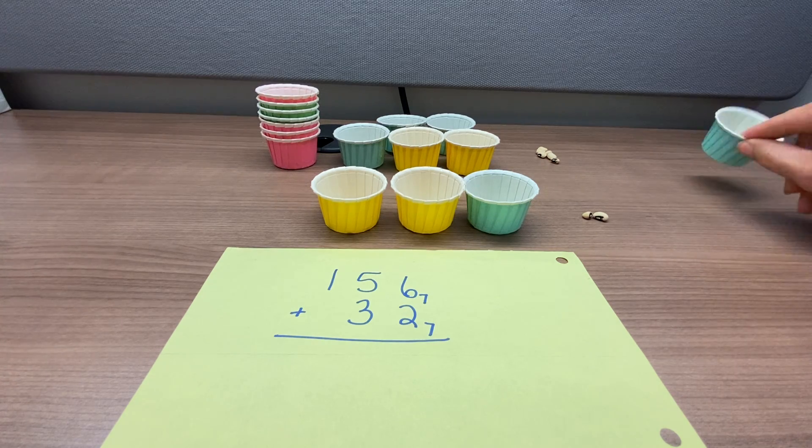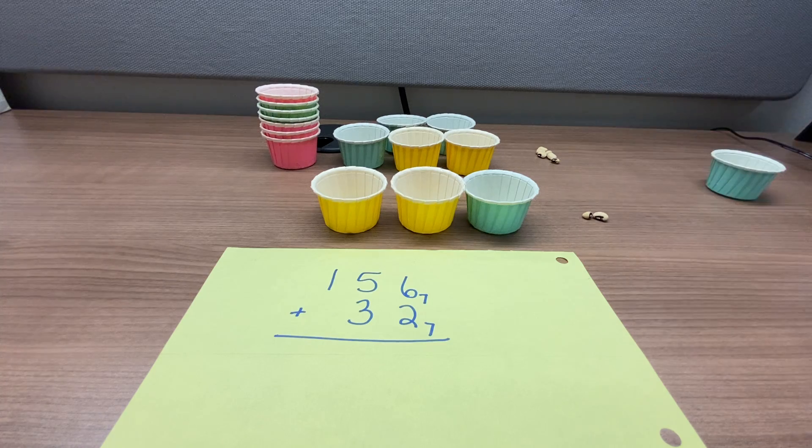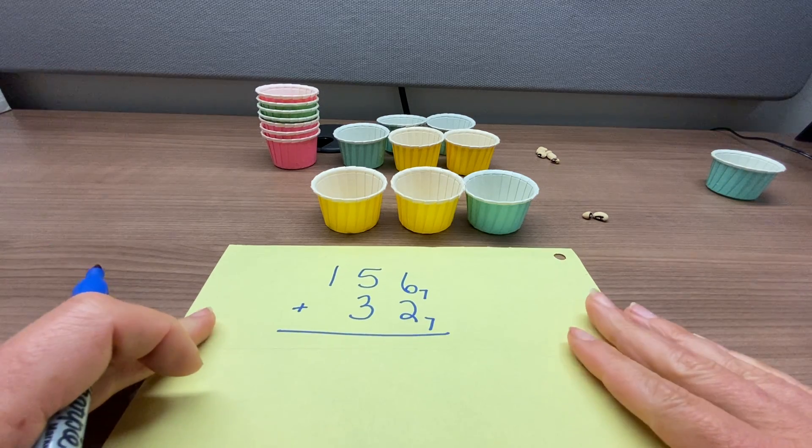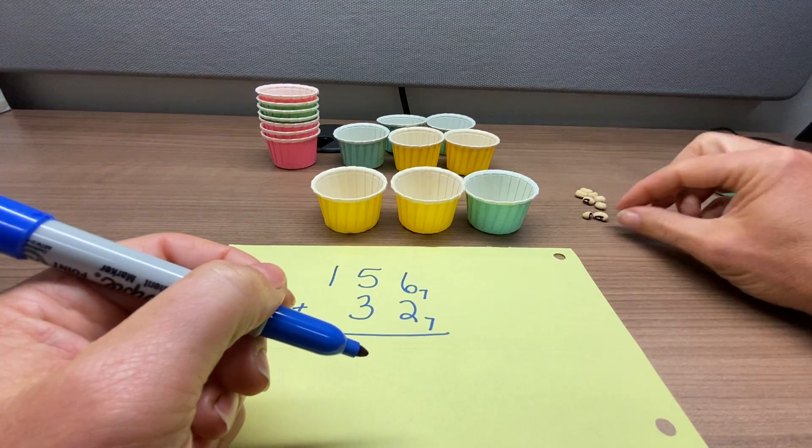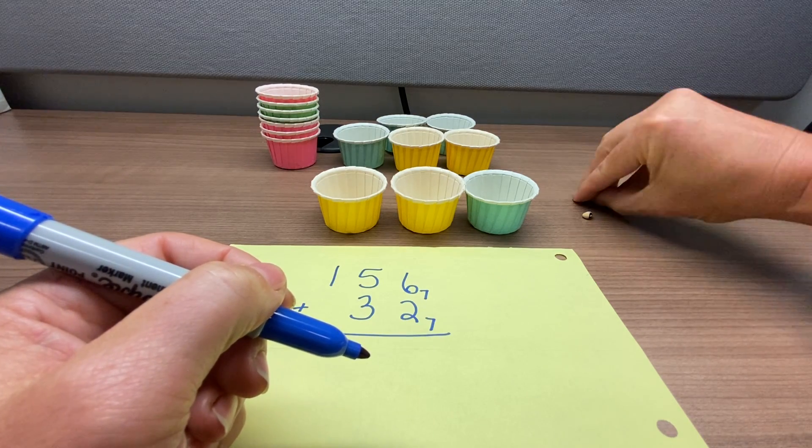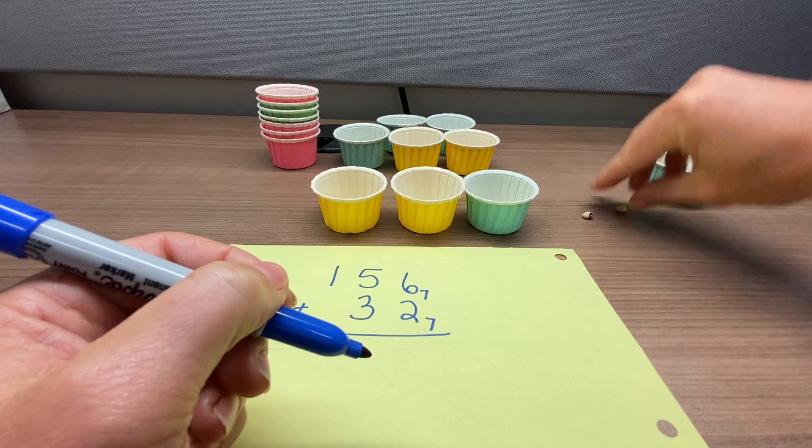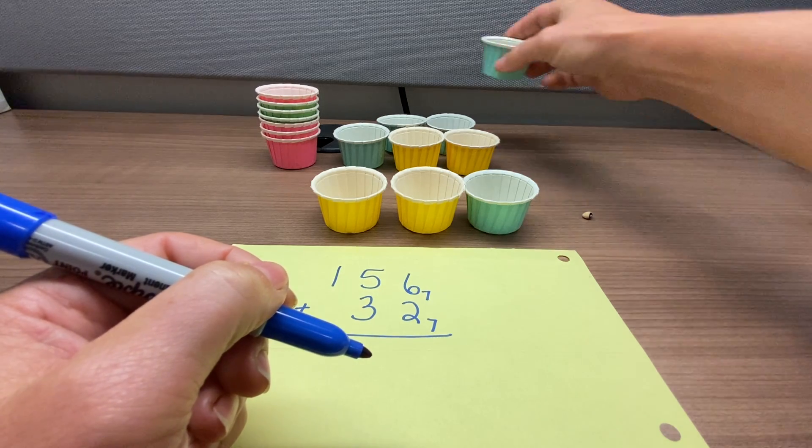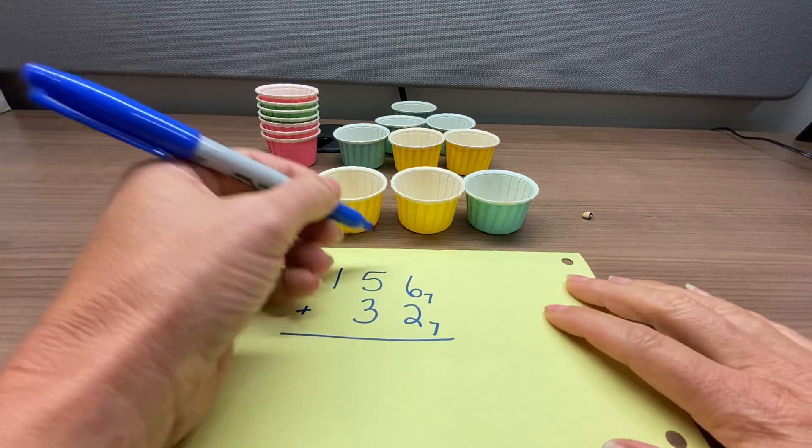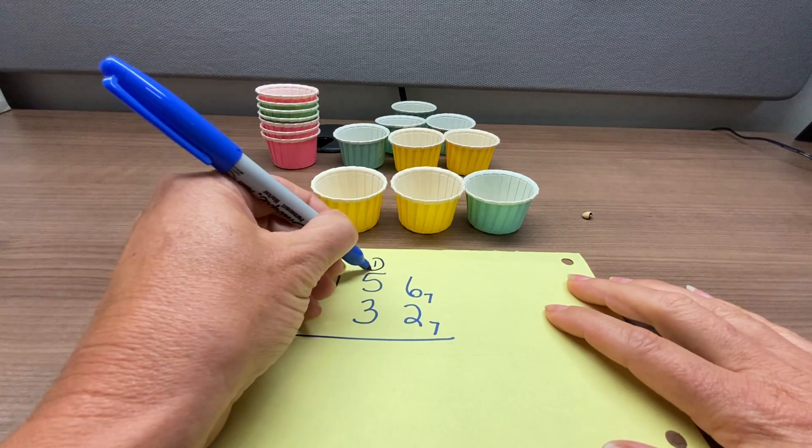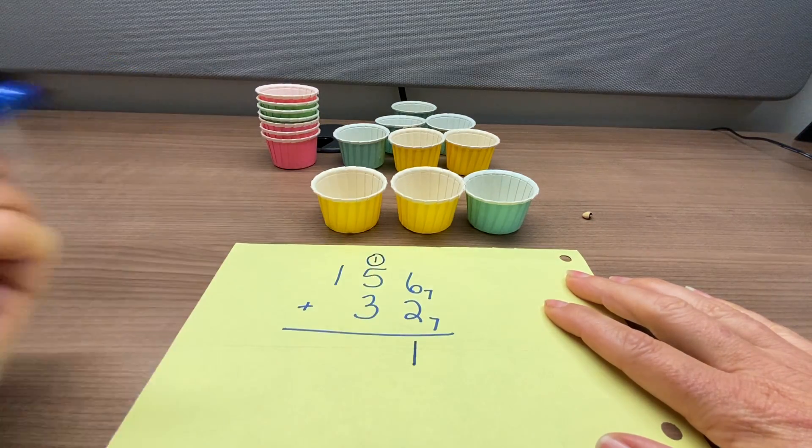Now notice I've got an extra cup ready over here because I'm going to need to regroup these beans in the ones place. So we begin with that. We start with 6 plus 2. Notice that if I take 6 and I even add one more, that's my 7. So that's a group of 7 that goes up to the next place value, but I have 1 left in the ones place. So recording that, 1 group of 7, 1 in the ones place.